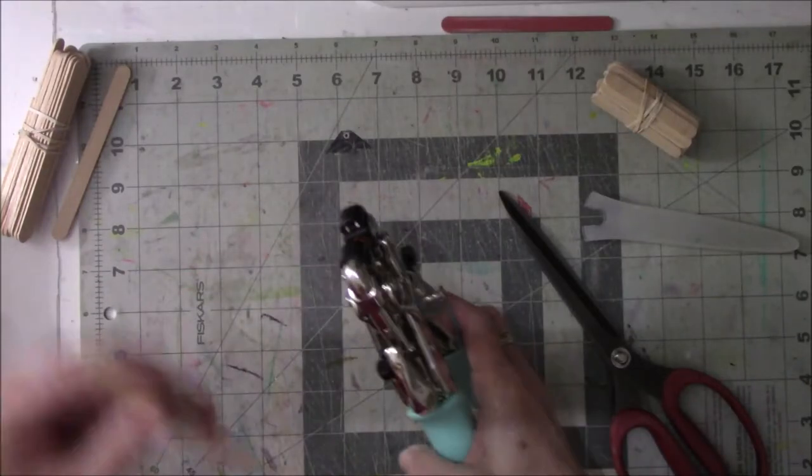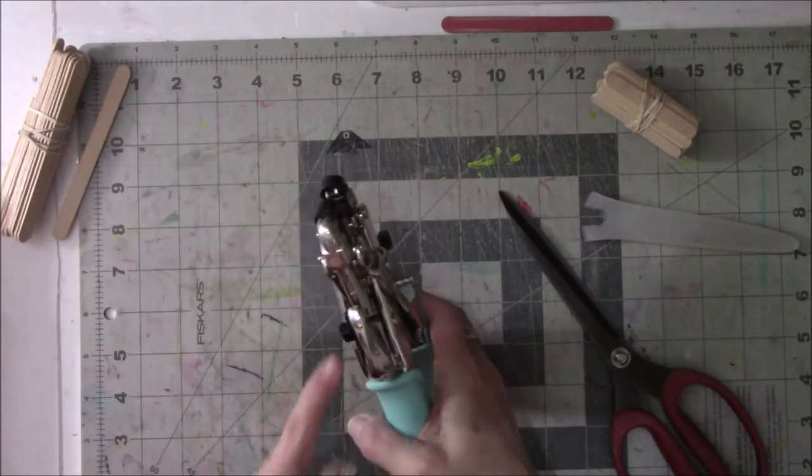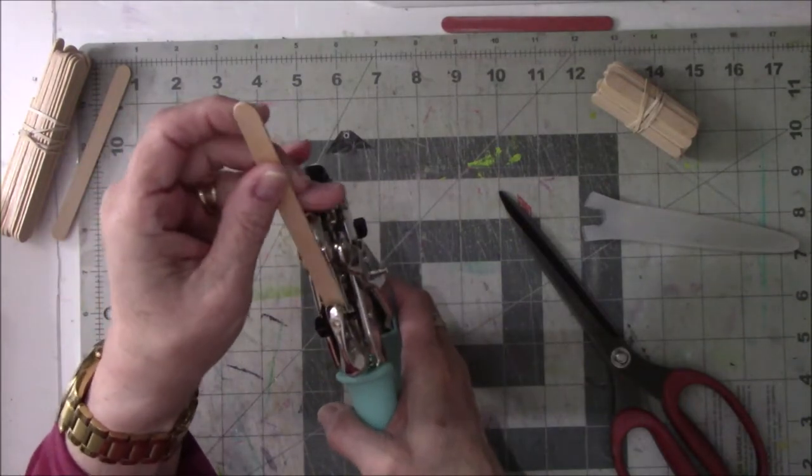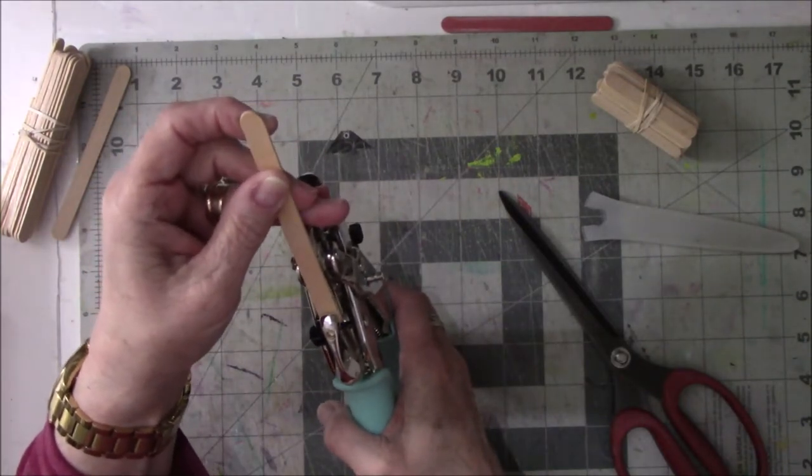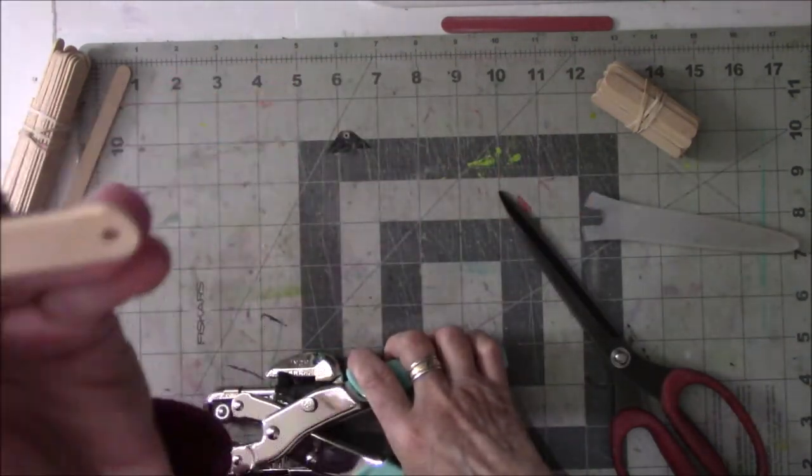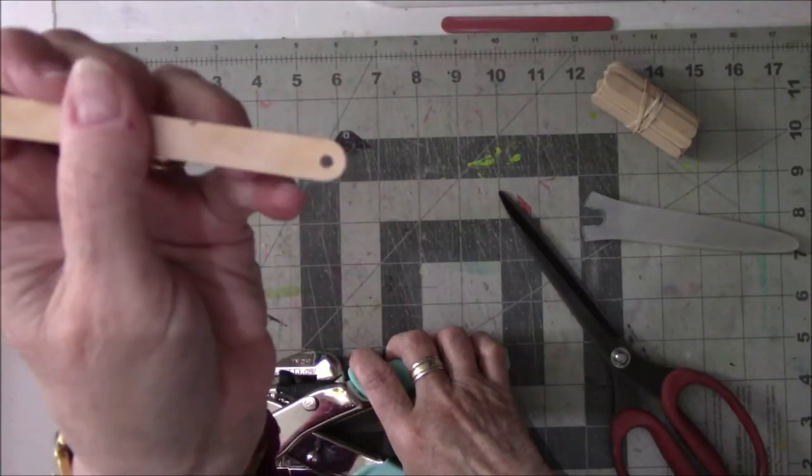And what you do is you just kind of center it so that you can see inside the hole here where the popsicle stick is. You just slide that in, and ta-da! You have a hole. Look at that. I had no idea.